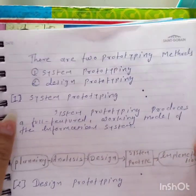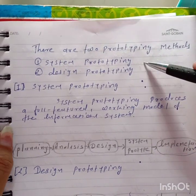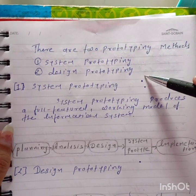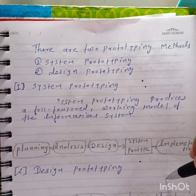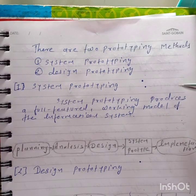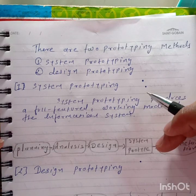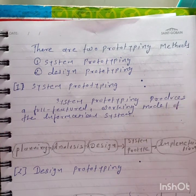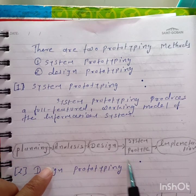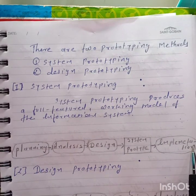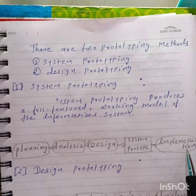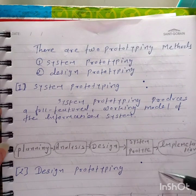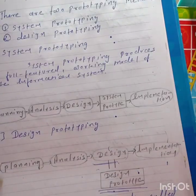There are two types of prototyping methods: system prototyping and design prototyping. In system prototyping, the system analyst gathers all the information and requirements from the users, then plans, analyzes, designs, creates a system prototype, and implements it directly.